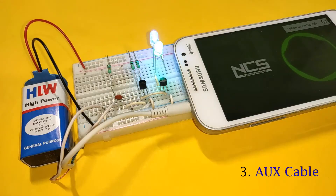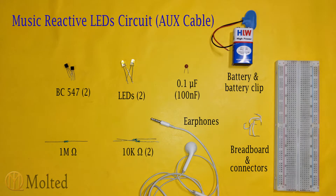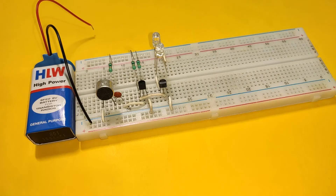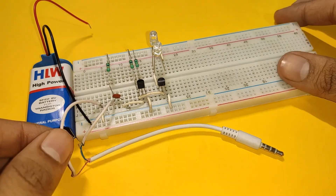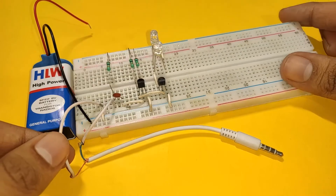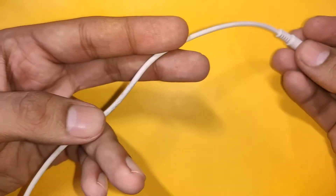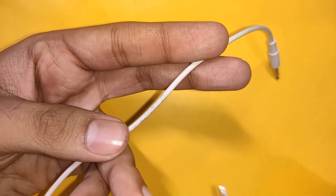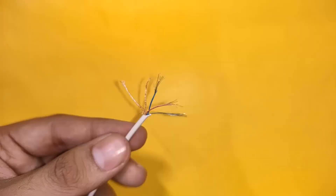The next circuit uses an aux cable. These are the components required and this is the circuit diagram. It is similar to the previous circuit, except the aux cable is placed in the position of the microphone. We can get this aux cable from old earphones — just cut out the jack and expose the wire.